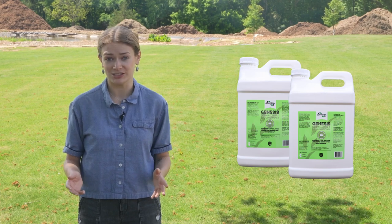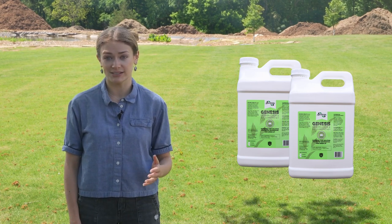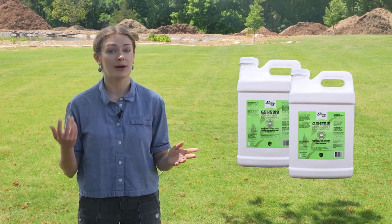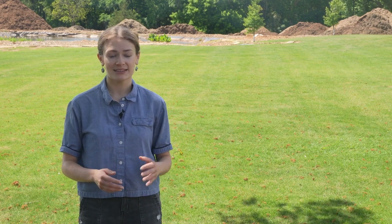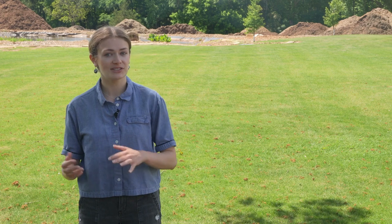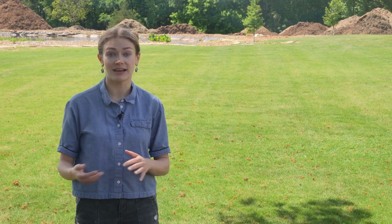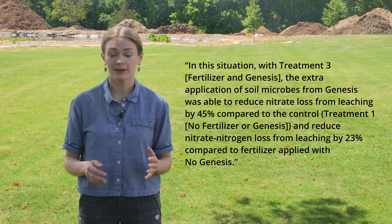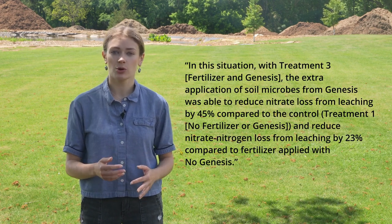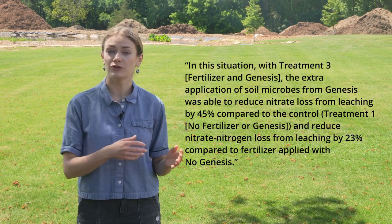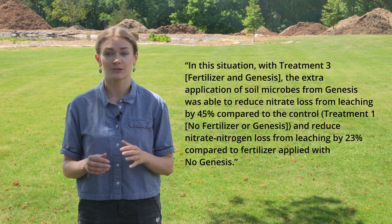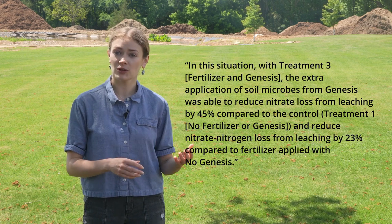To find out just how much Genesis can prevent leaching, we conducted a study on soil treated with Genesis, soil treated with Genesis and the recommended amount of fertilizer, and soil treated with just fertilizer and no Genesis. We contracted IAS Labs and agronomist Sherry McLean to perform a leachate test. Leachate is water that has passed through or leached out of a solid — in this case soil — and contains some of the elements of the solid it passed through. IAS Labs found that with treatment 3 — fertilizer and Genesis — the extra application of soil microbes from Genesis was able to reduce nitrate loss from leaching by 45% compared to soil with no fertilizer or Genesis, and reduce nitrate-nitrogen loss from leaching by 23% compared to fertilizer applied with no Genesis.